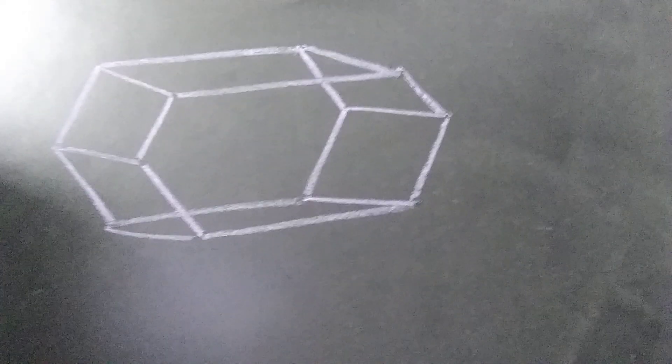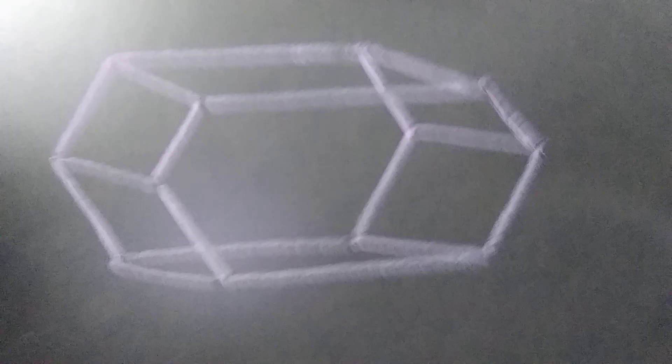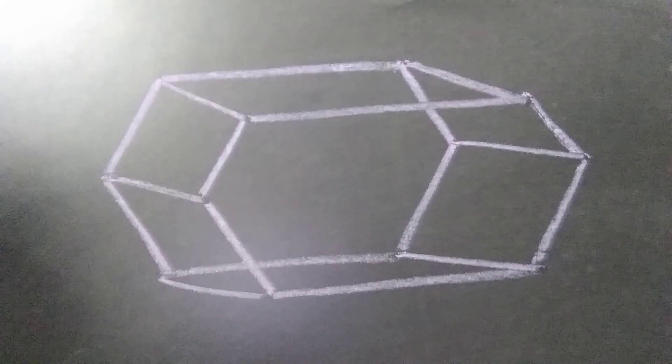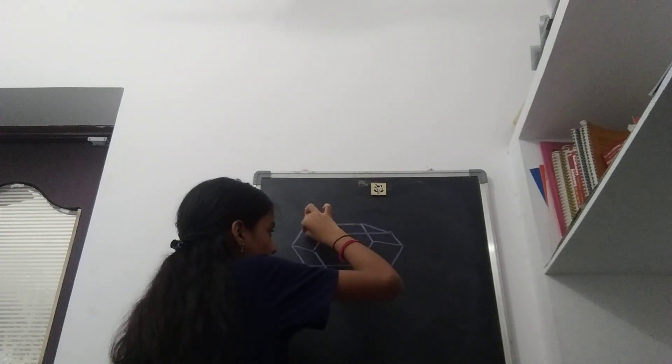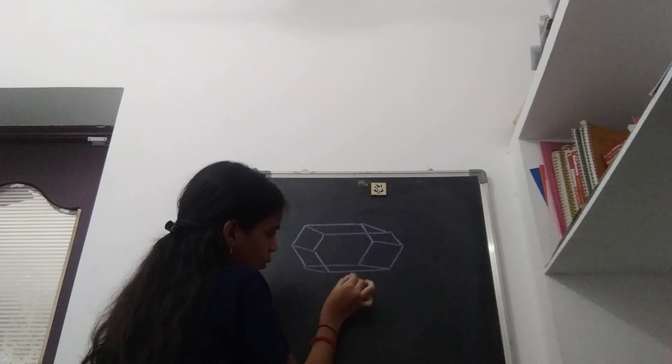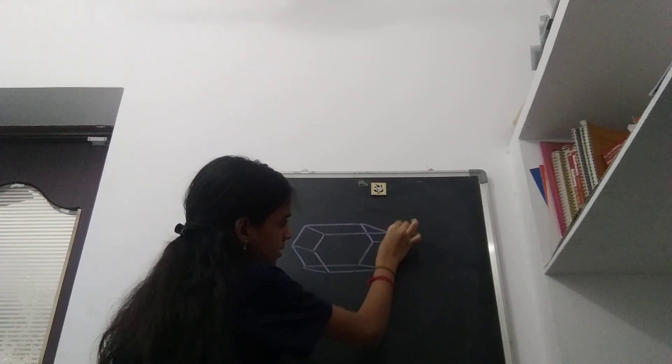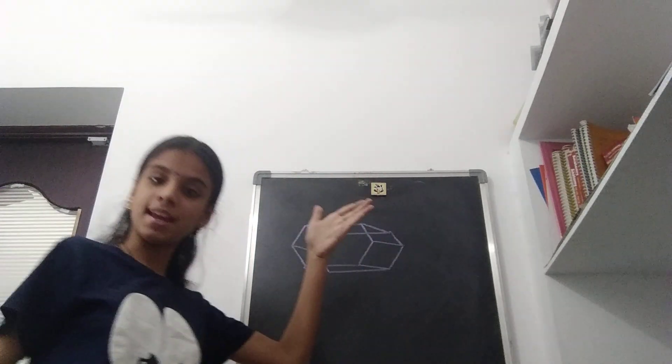And see, this is the hexagonal prism which I was telling you about. Okay, it has eight faces. Let me count: one, two, three, four, five, six, seven, and the back side is eight.